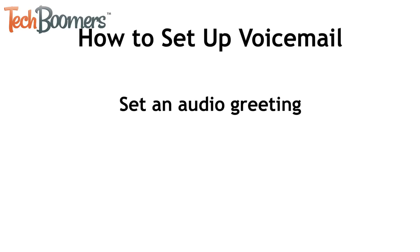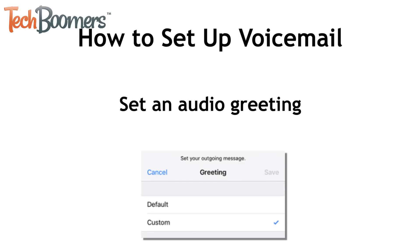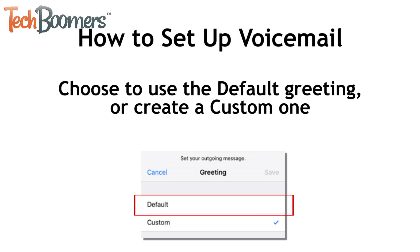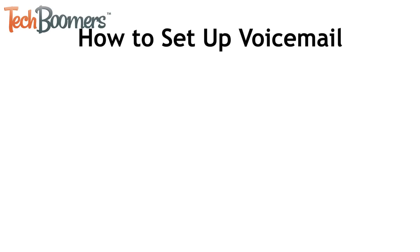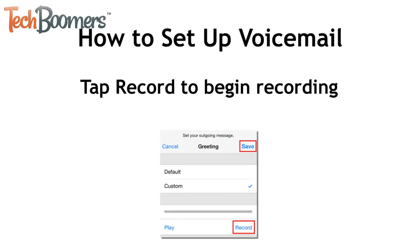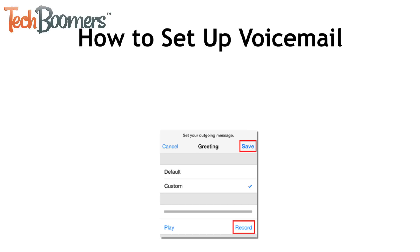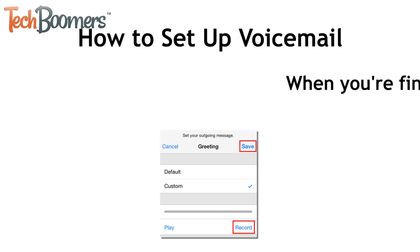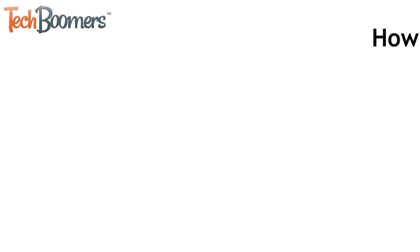The last step in setting up your voicemail system on your iPhone is to set an audio greeting that people will hear before leaving you a voicemail message. You can choose to use the default greeting by tapping Default, or record your own personalized greeting by tapping Custom. If you choose to record a custom greeting, tap Record to begin recording one. When you're finished recording your greeting, tap Save in the top right corner. Those are all the steps to setting up your voicemail.